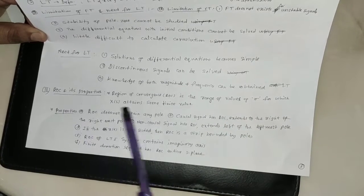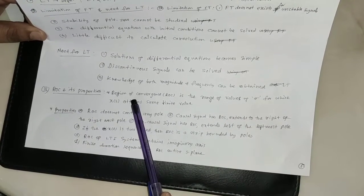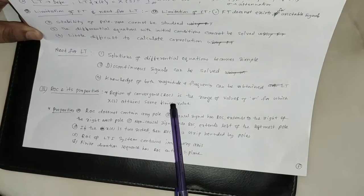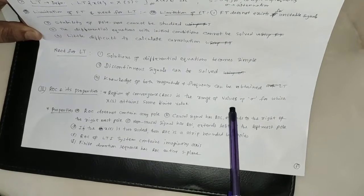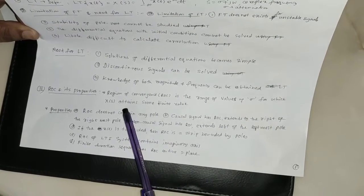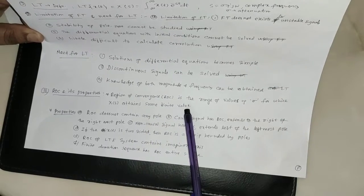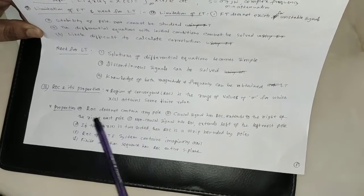Now I will define what is ROC. ROC is region of convergence. It is the range of values of sigma for which X of s attains some finite value. There are some properties of ROC.